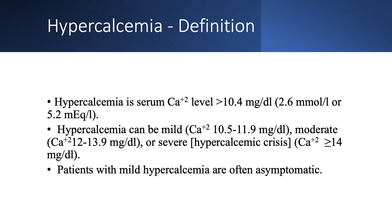What is the definition of hypercalcemia? Hypercalcemia is serum calcium over 10.4 mg per deciliter, or 2.6 mmol per liter. It can be mild — 10.5 to 11.9 — or moderate — 12 to 13.9 — or severe. Severe hypercalcemia is also called hypercalcemic crisis, and it is calcium equal to or over 14 mg per deciliter.